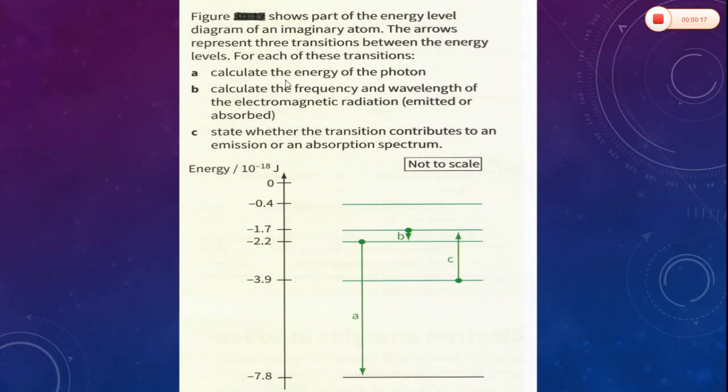you need to calculate the energy of the photon, calculate the frequency and wavelength of the electromagnetic radiation emitted or absorbed, and part C is state whether the transition contributes to an emission or an absorption spectrum. This diagram is not to scale. So this energy is given in joules. And just see the direction of the arrows.